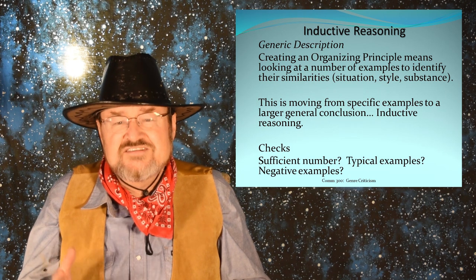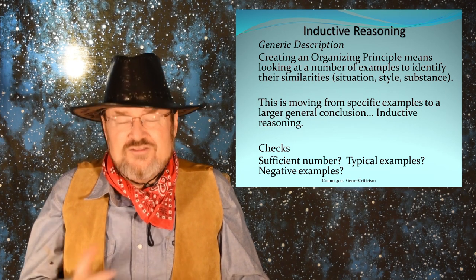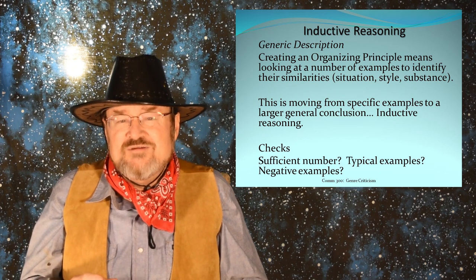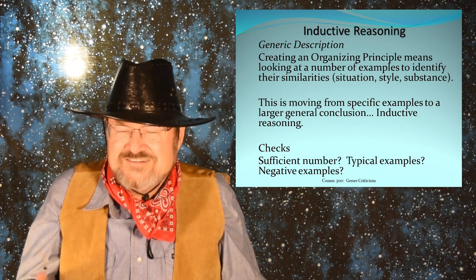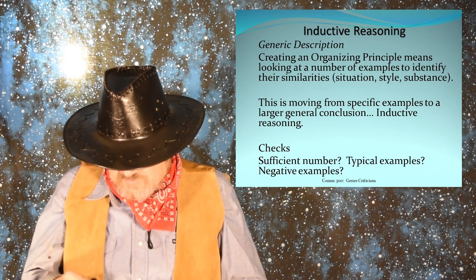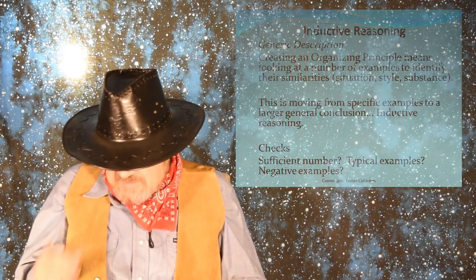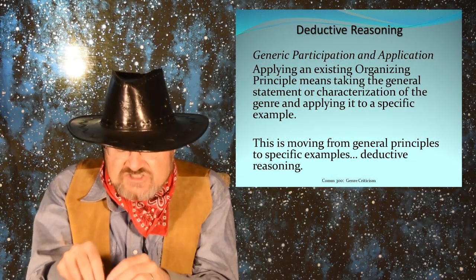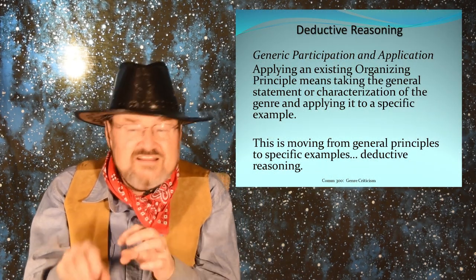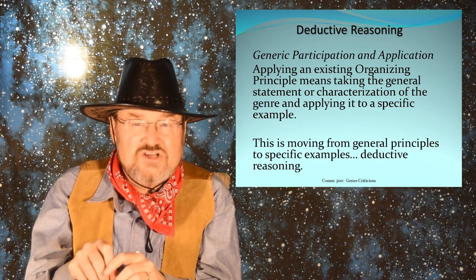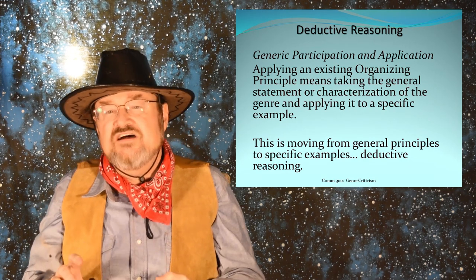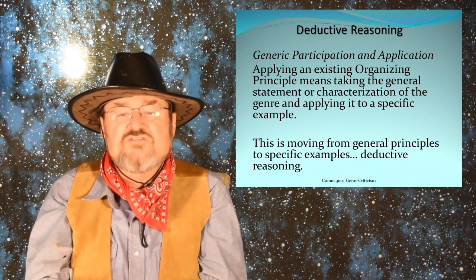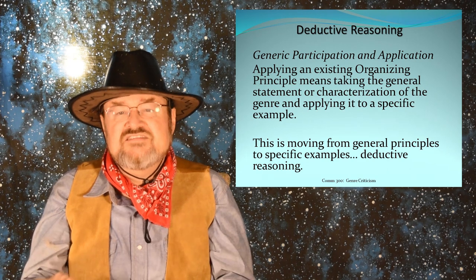The same checks still apply: Are there a sufficient number of examples? Are they fairly typical? Are there any negative examples? So we can still question that process. When you take an organizing principle — a genre — and apply it to a specific example to see if it's part of that genre, then that's deductive. You're taking a larger general genre and applying it to a specific example, and that's deductive.